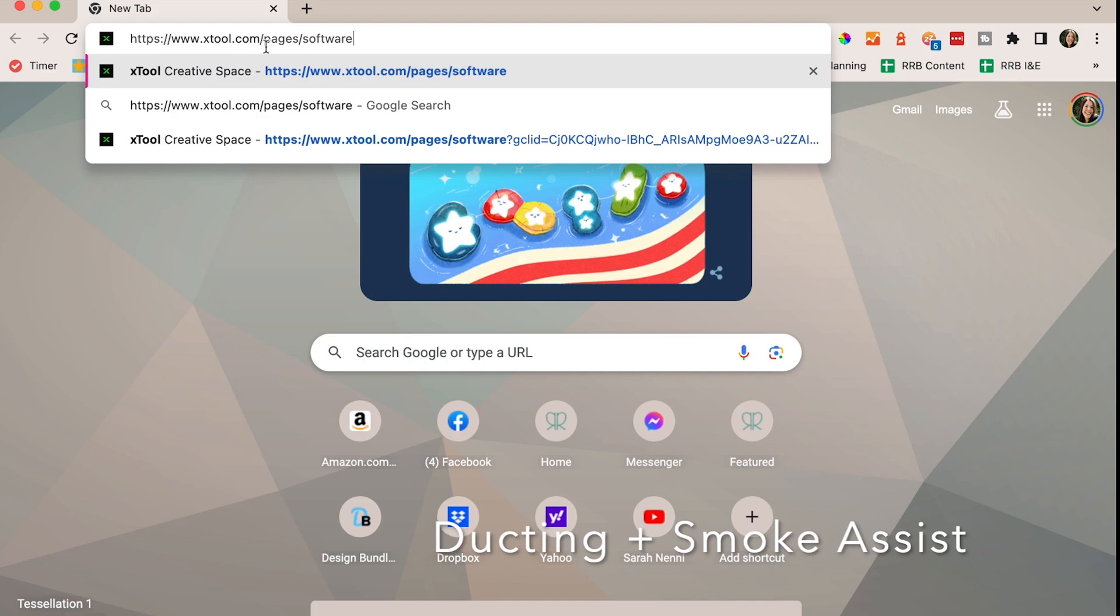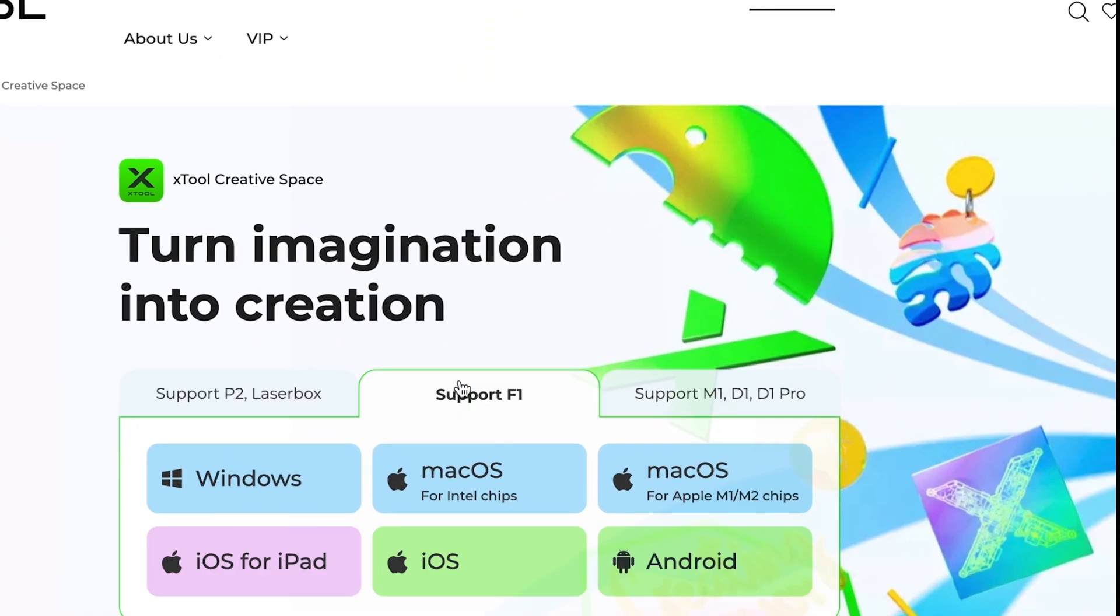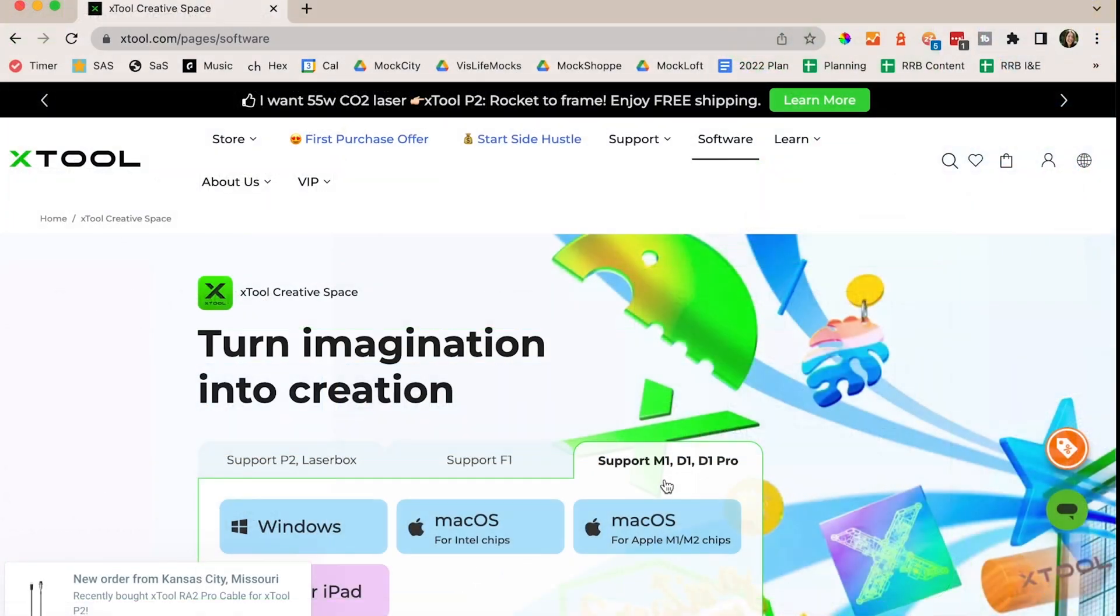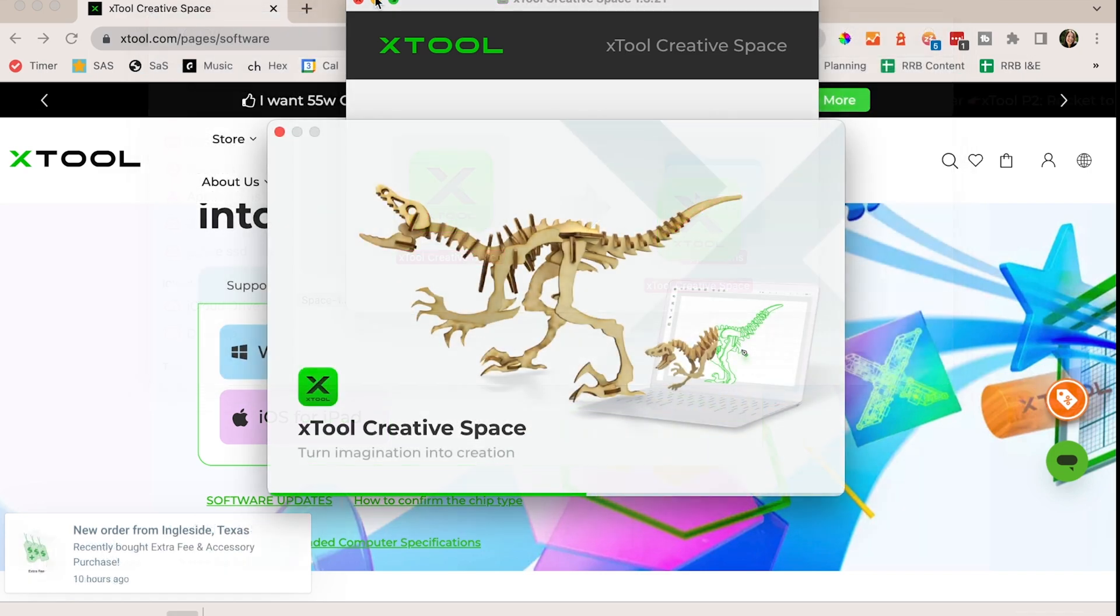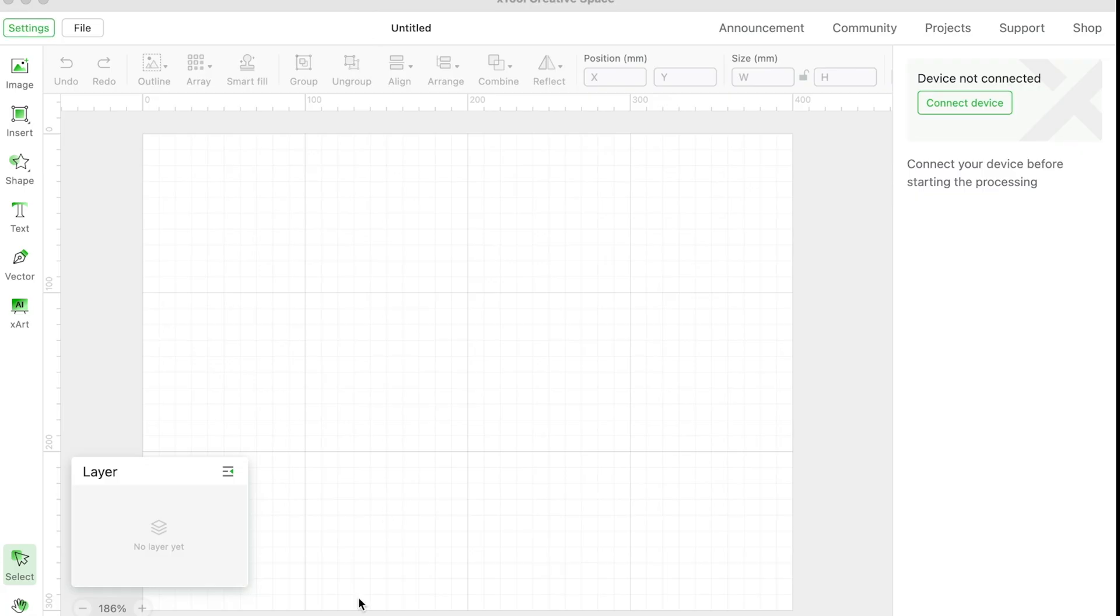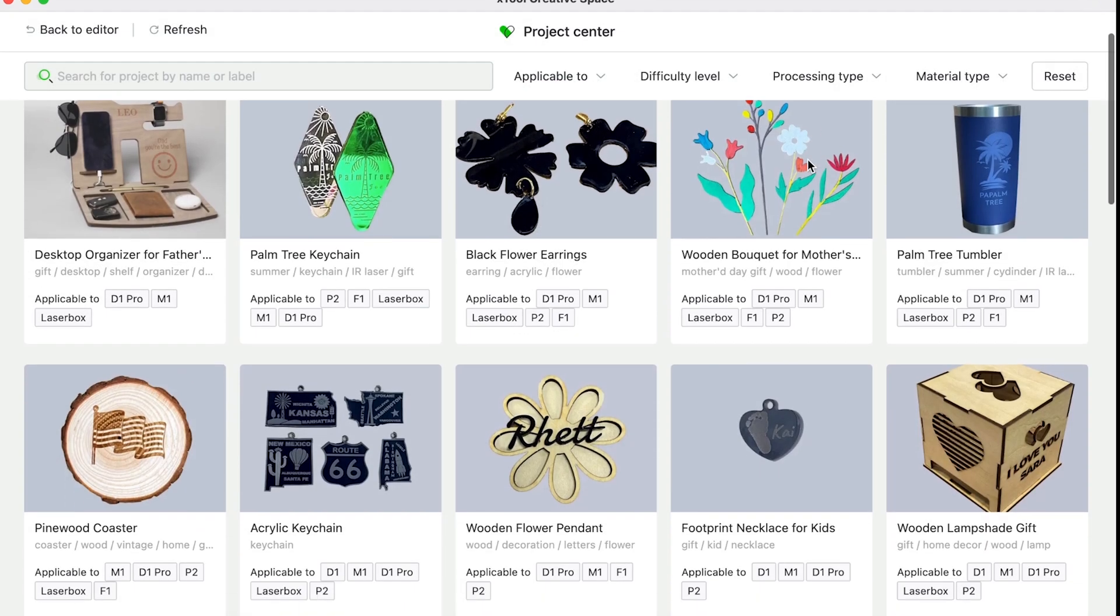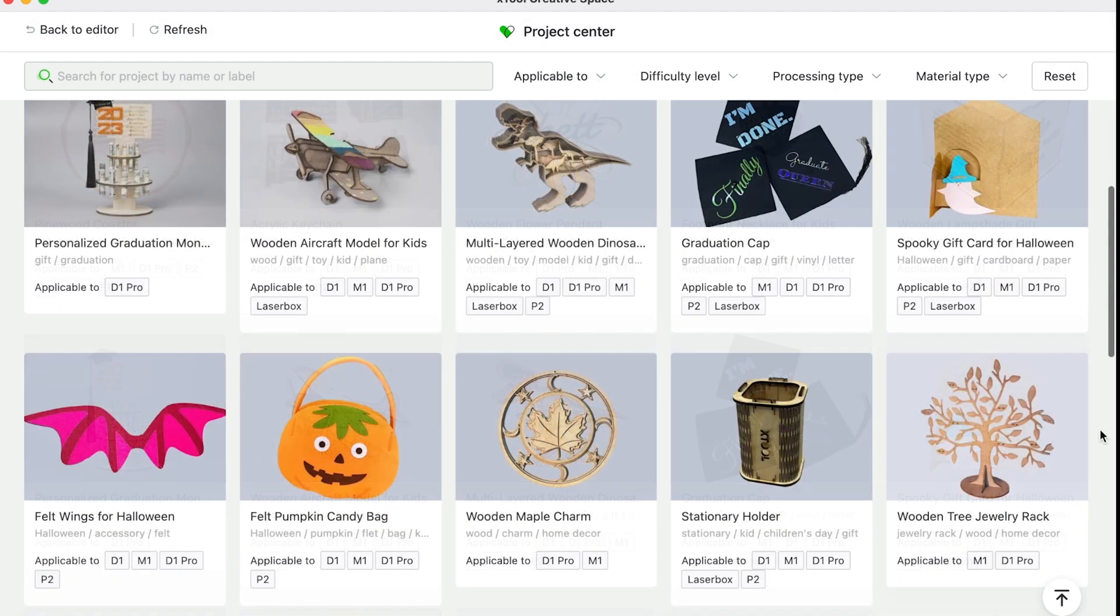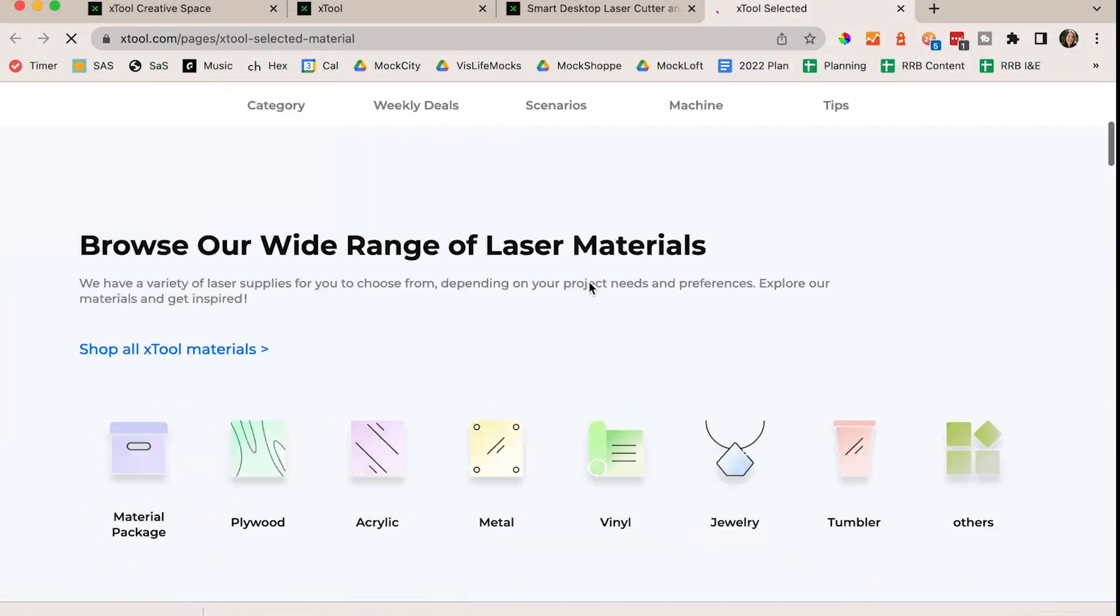So we went ahead and set up the ducting and smoke assist off camera and now it's time I had to go see about this software. So similar to cutting machines we are going to be using a proprietary software called XCS. I'm not a huge fan of proprietary software because we are at their whims but I kind of tooled around in here looked at some projects before I got started with mine just to see what they have available.